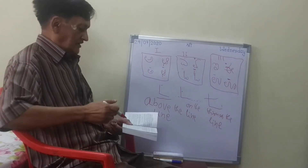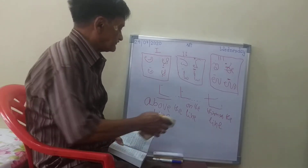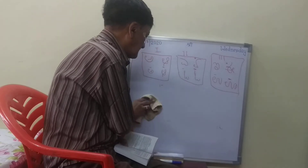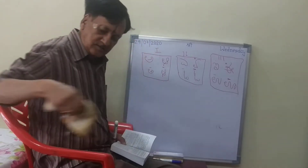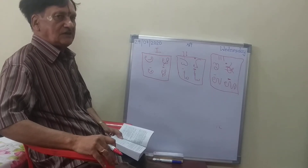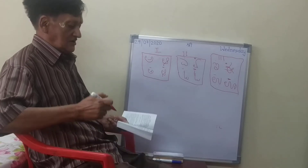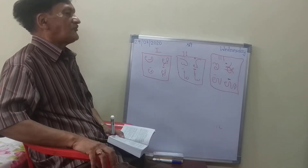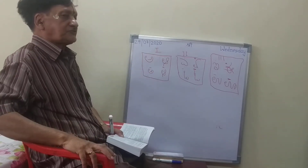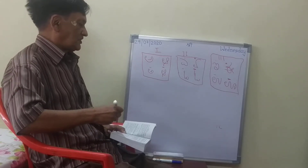But when a word begins with a horizontal stroke, the rule slightly changes — position slightly changes. When a word begins with a horizontal stroke — which are the horizontal strokes? K, G, M, N, Y. When a word begins with any one of these horizontal strokes, then if there is a first place vowel, the next downward stroke which comes should also be written above the line.